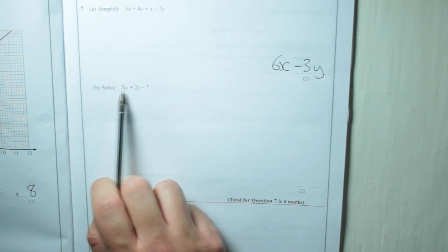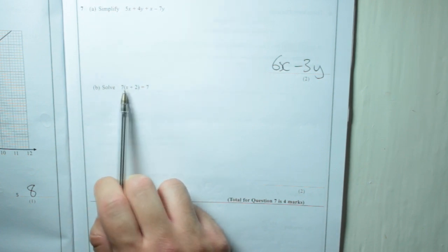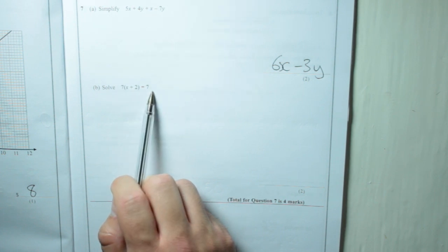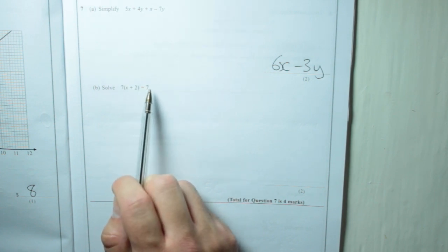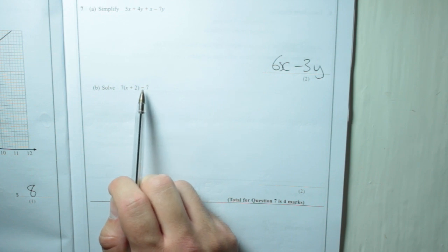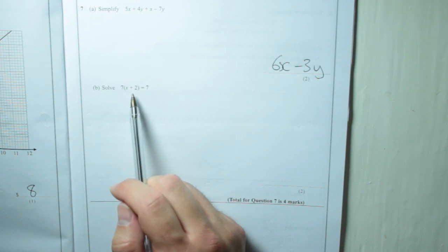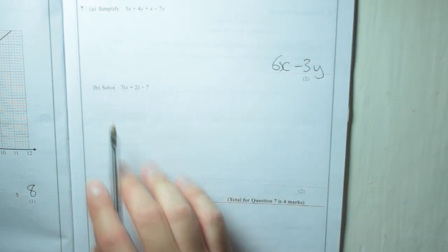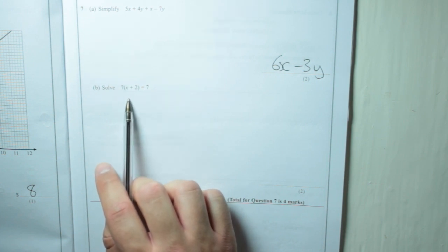B, solve 7 in brackets x plus 2 equals 7. Now there's two ways of doing this, and I'm going to stick with probably the safest way. You might think the other way is quicker if you know what it is straight away, but I'm going to stick with this method, which is to multiply the bracket out first, because you nearly always have to do that. That's the best thing to do usually.